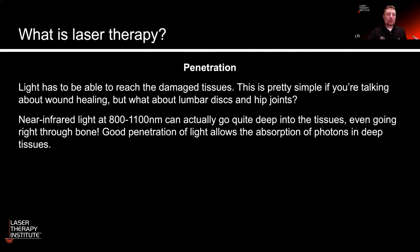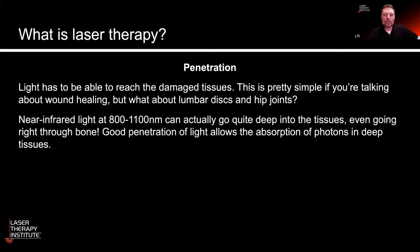We know that near-infrared light in the 800 to 1100 nanometer spectrum can go pretty deep into the tissues, even right through bone, and if you can get that deep, then you can get the absorption you need to have deep tissue effects.